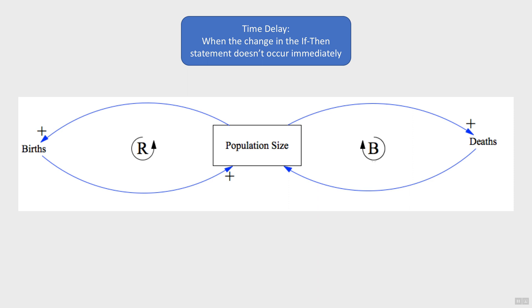The last component is time delays. Sometimes the causal relationship takes time to have an effect. For example, the increase in births doesn't happen immediately from an increase in the population size. It takes years for babies to grow into adults and begin having babies of their own, so we can put a time delay symbol on this link.